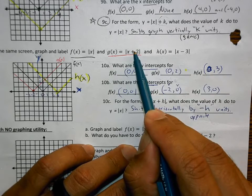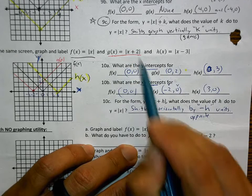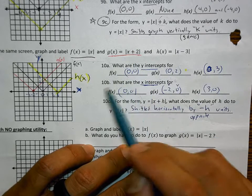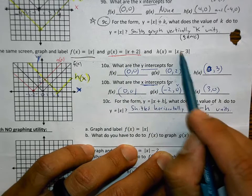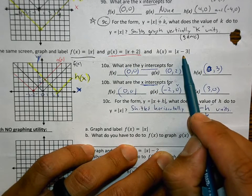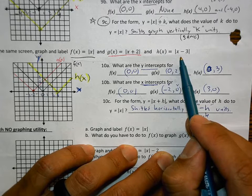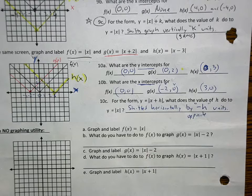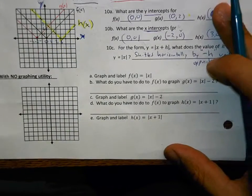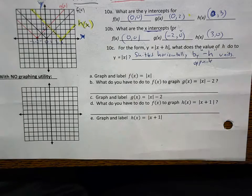So when we shift a graph with an h, with something inside the function, it's shifted horizontally by negative h units. I know that's hard to understand. But the easiest I can make it for you is this. It's the opposite. It's the opposite of whatever this is. If this is plus 2, you're shifting it to the left by 2. Negative 2 horizontally. If it's minus 3, it shifts it to the right by 3. Or positive 3 in the x direction.